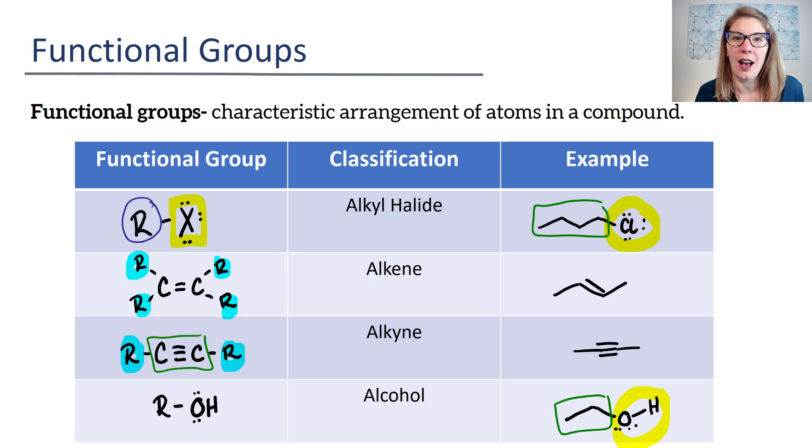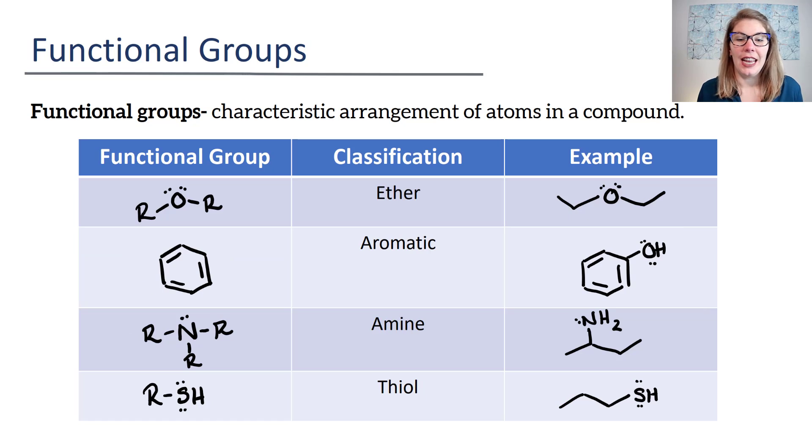Let's look at another set of functional groups. In this set, we start off with ether. Ether has a format where you start with an R, then you're singly bound to an O, and then you end with an R. Off to the side, I have my R and my other R, and then the oxygen in the middle.